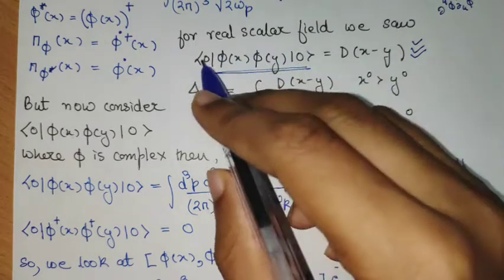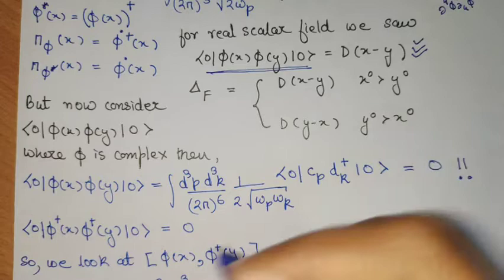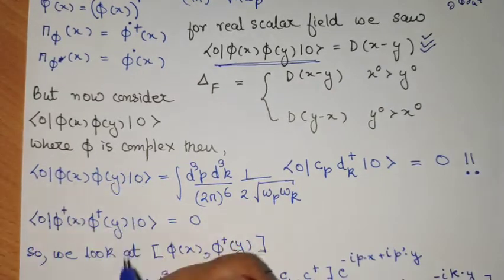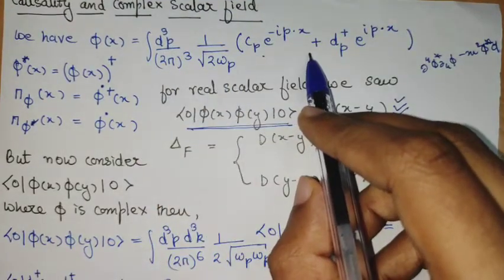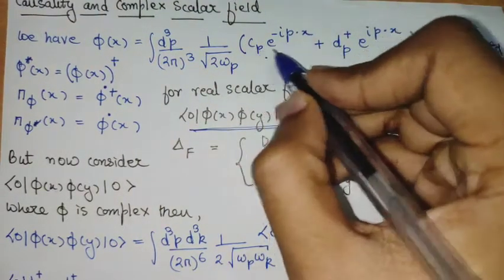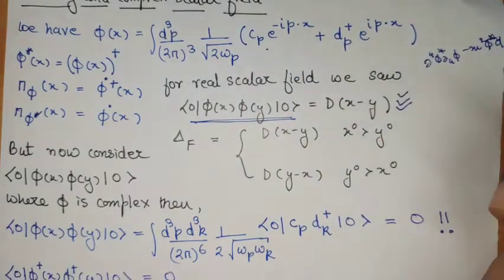Let's try to calculate this propagator in this case of complex scalar field. So this is the form of the propagator, where this operator form we can get from here. But you see, CP and DP will commute always, whether it be creation operator or annihilation operator.